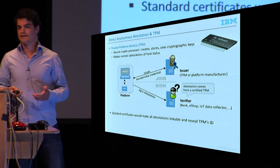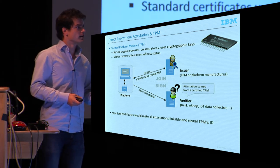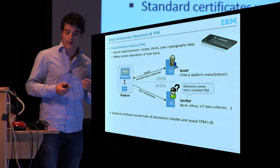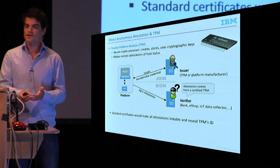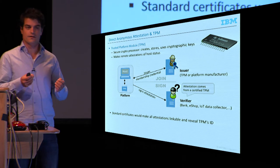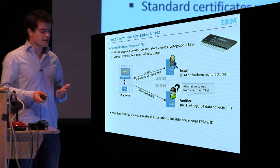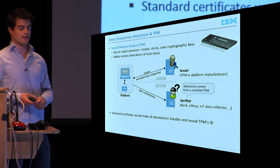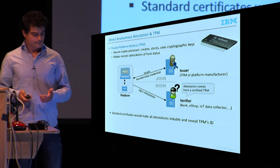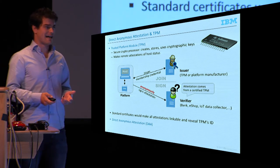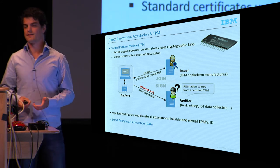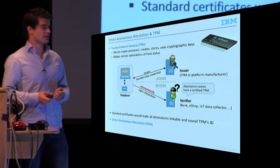We could do this with standard signatures and X.509 credentials, but then there's one problem: you're linkable. Whenever you send an attestation to a verifier, he sees the TPM's identity and can follow you around. So if you perform attestations to many different verifiers, your privacy will be lost. To prevent this, people came up with Direct Anonymous Attestation, or DAA, which works the same way but the attestations are anonymous — they don't reveal anything about the platform in question.